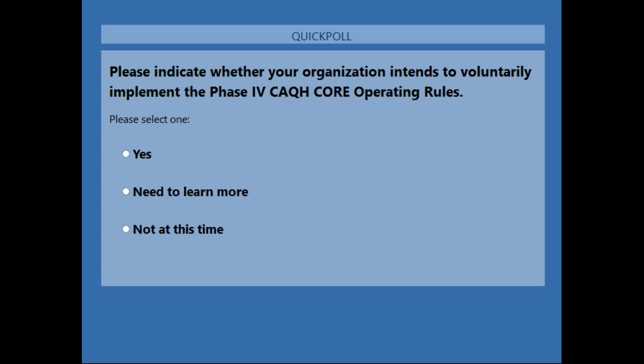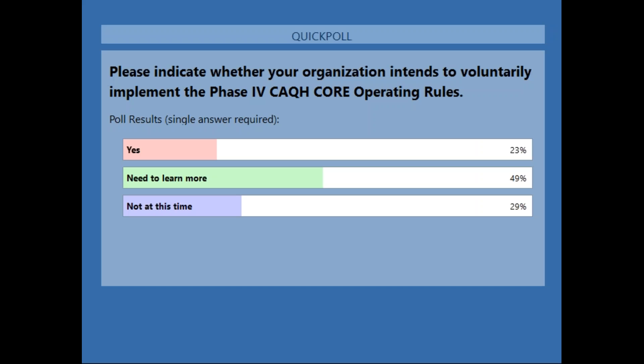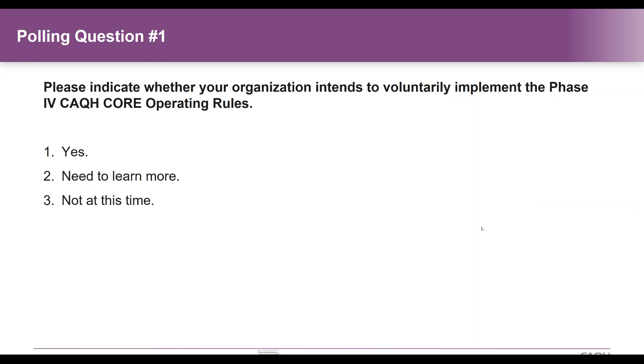We have about 70% voting, and I see we have about 149 people on the call. So let's take a look: 49% indicating they need to learn more. It's great that you are on this call, and we're hoping that we can answer some questions. 29% saying not at this time, and then 23% saying yes. I hope you find the content on this webinar informative.